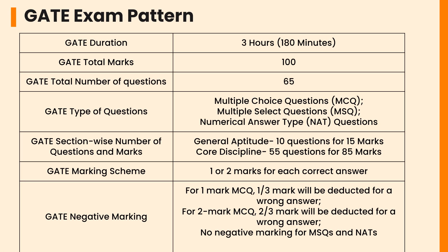Let's check the GATE exam pattern. The exam is conducted online for a duration of 3 hours — 180 minutes — with a total of 100 marks. There are three types of questions: Multiple Choice Questions, Multiple Select Questions, and Numerical Answer Type Questions. The paper includes 65 questions, mainly divided into the General Aptitude section and Core Discipline. General Aptitude carries 10 questions for 15 marks, while the remaining 55 questions for 85 marks are from Core Discipline. For every correct answer, you will get 1 or 2 marks. There is no negative marking in NAT and MSQ sections. For 1-mark MCQs, 1/3 mark will be deducted for a wrong answer. For 2-mark MCQs, 2/3 marks will be deducted for a wrong answer.